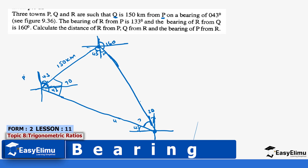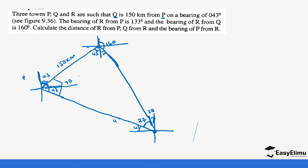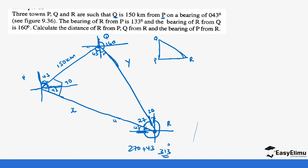So the angle at Q inside the triangle is 27 degrees. We are looking for the distance of R from P, which I'll call x, and Q from R, which I'll call y, and the bearing of P from R. The bearing of P from R: going from 270 degrees plus 43 degrees gives us 313 degrees. In the triangle, we have the right angle at P equal to 90 degrees, the angle at R is 27 degrees, and the angle at Q is 45 plus 20 equals 63 degrees.